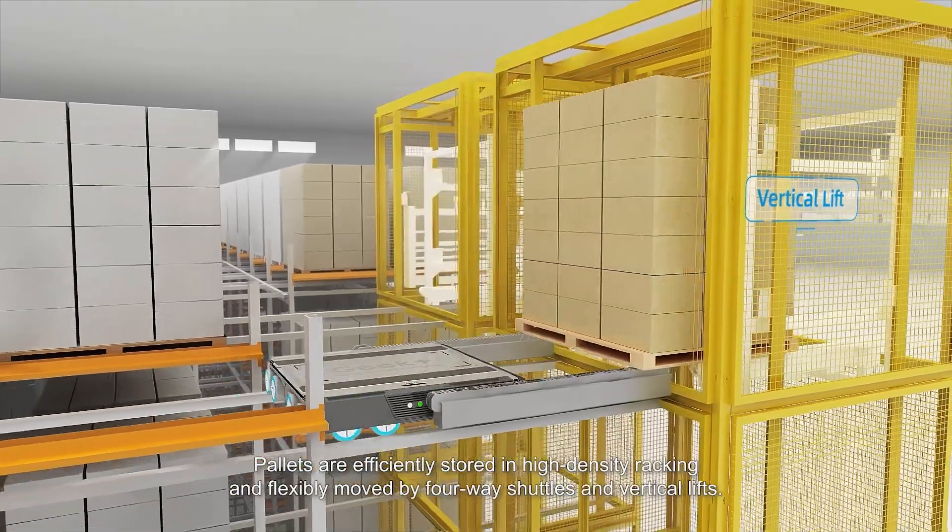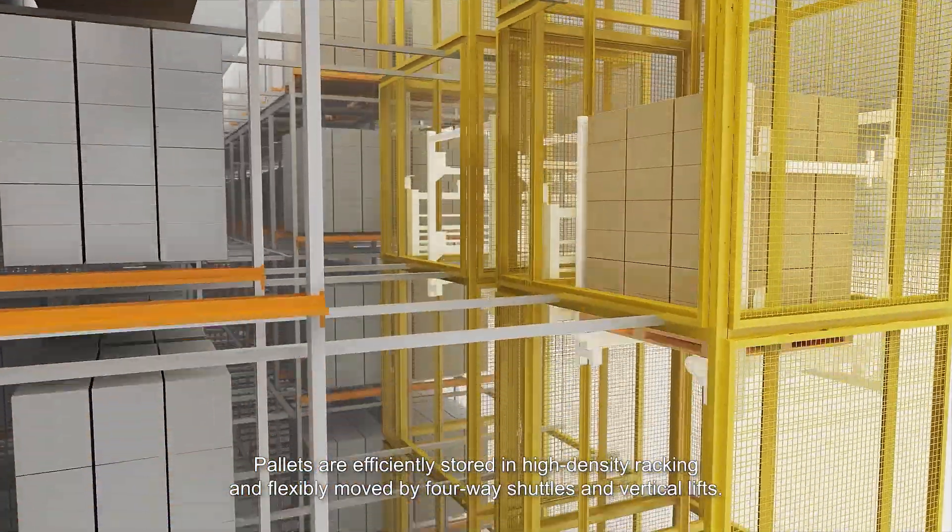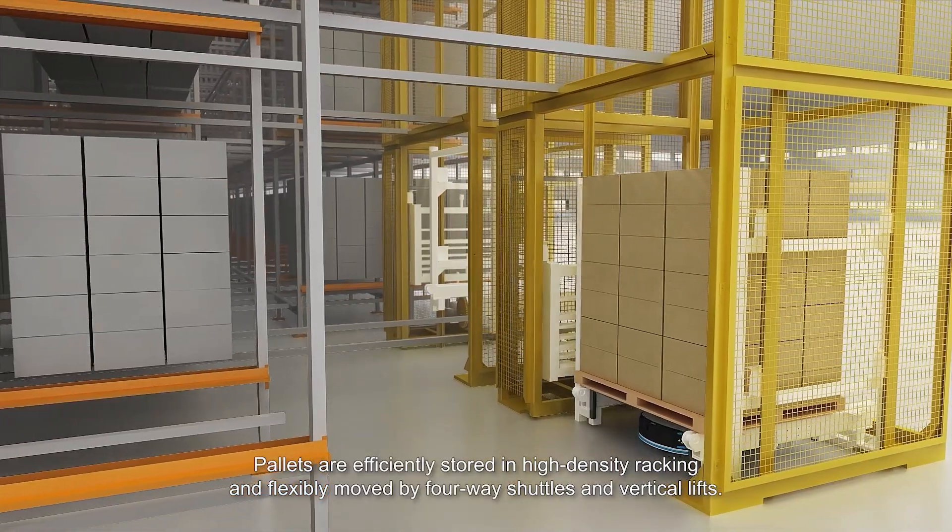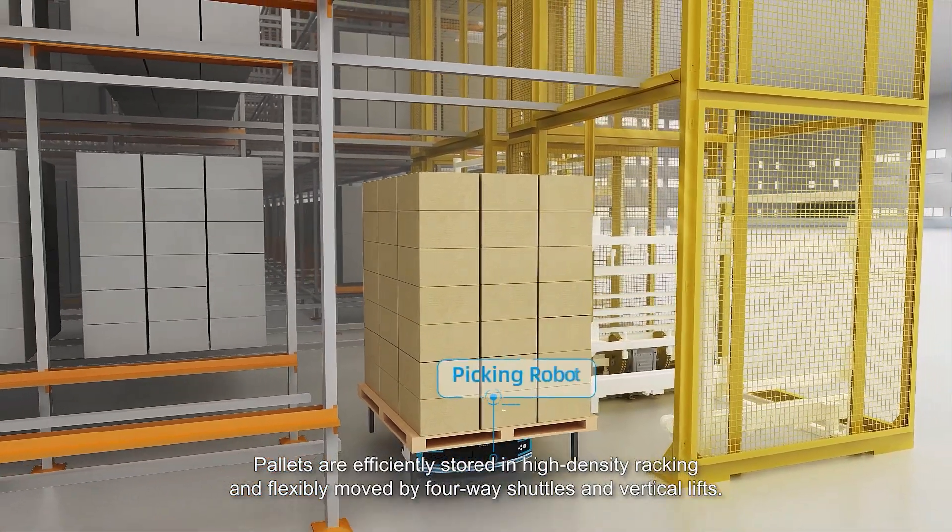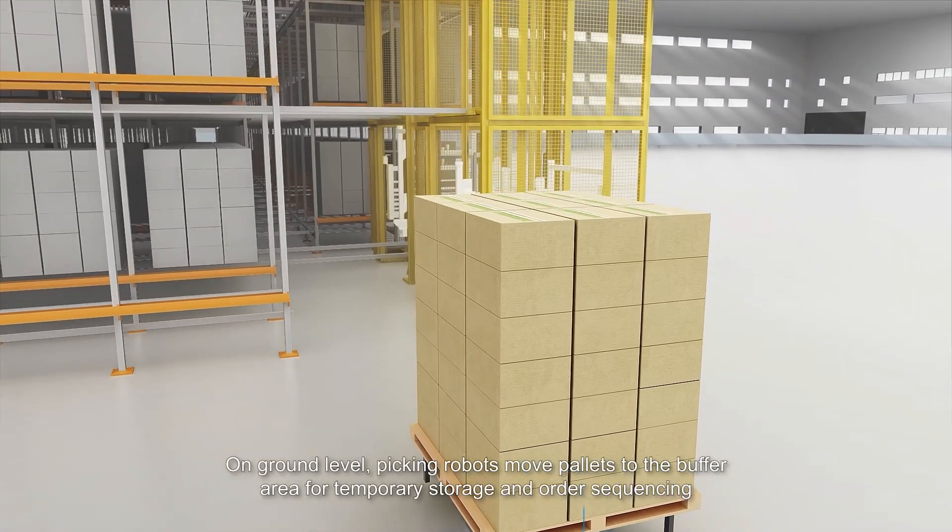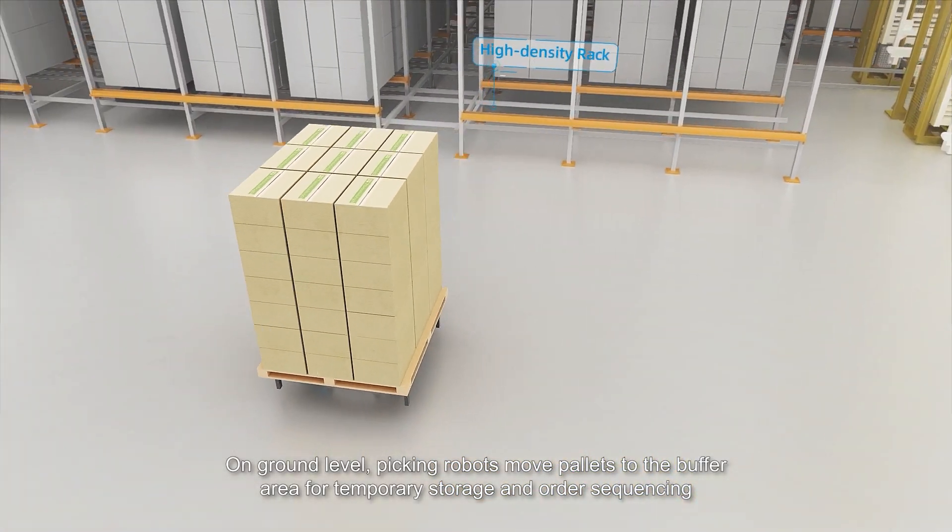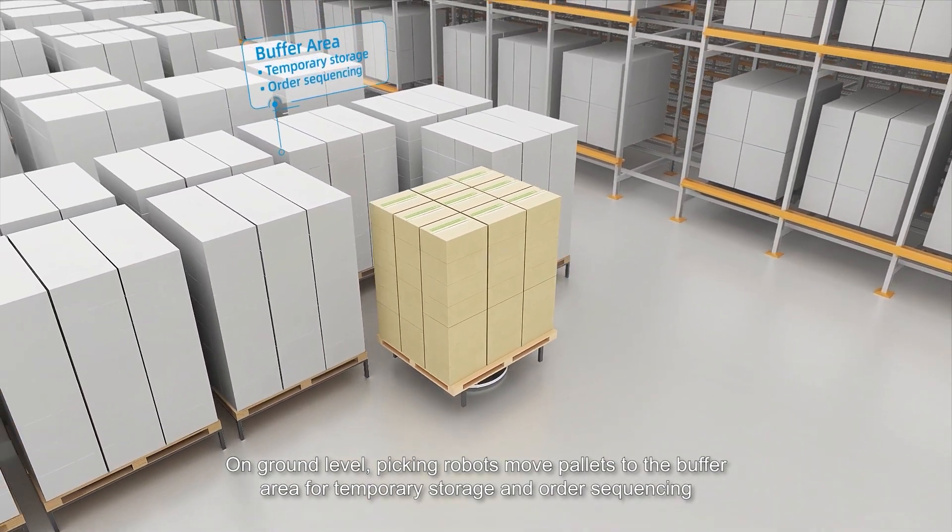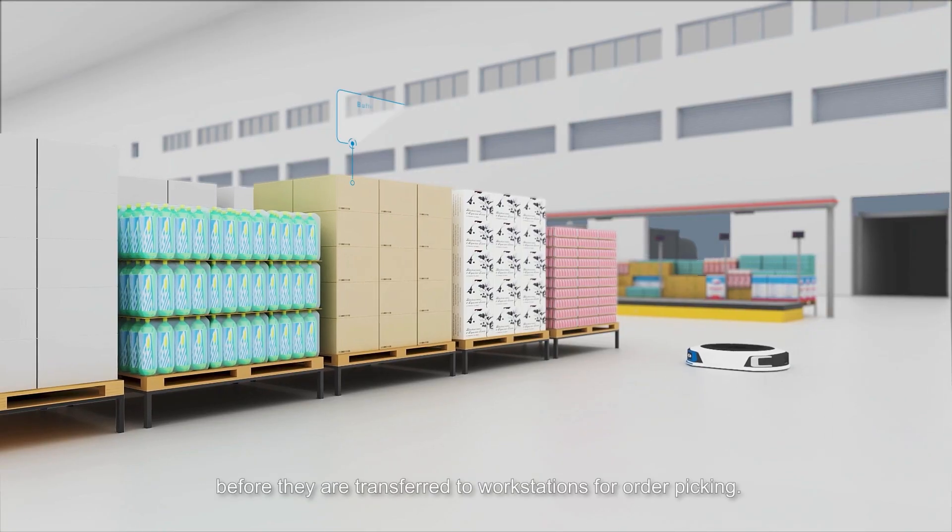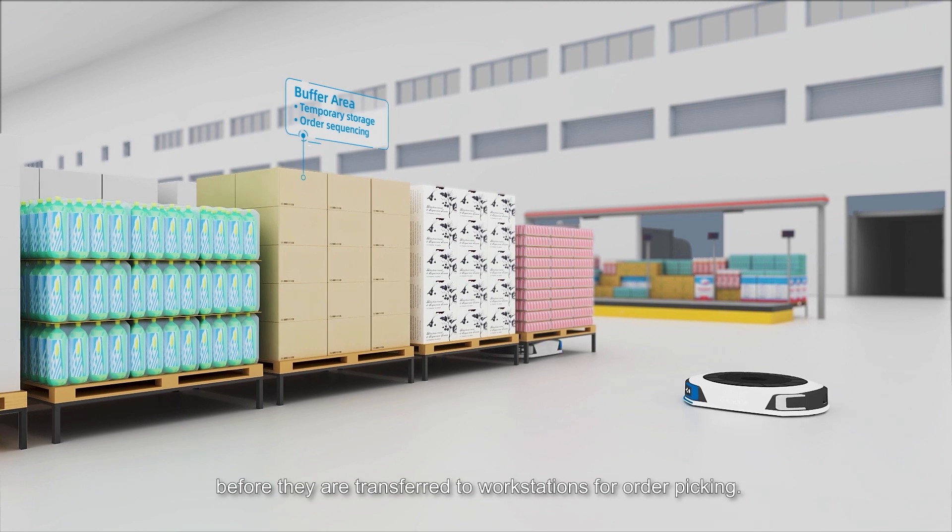Pallets are efficiently stored in high-density racking and flexibly moved by four-way shuttles and vertical lifts. On ground level, picking robots move pallets to the buffer area for temporary storage and order sequencing before they are transferred to workstations for order picking.